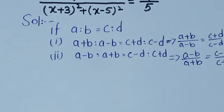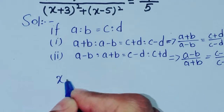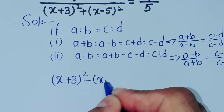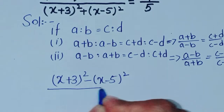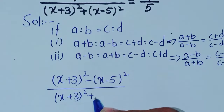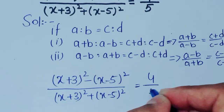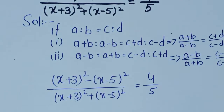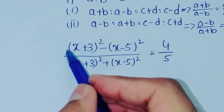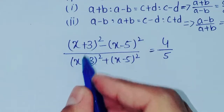Now solve this equation by using the theorem. The equation is: x plus 3 whole square minus x minus 5 whole square, over x plus 3 whole square plus x minus 5 whole square, is equal to 4 over 5. Here a and b are identified.